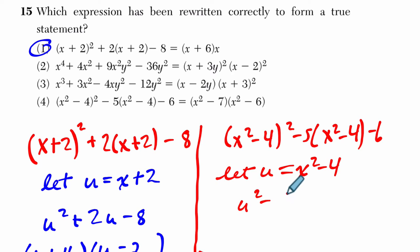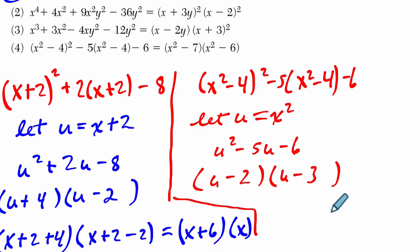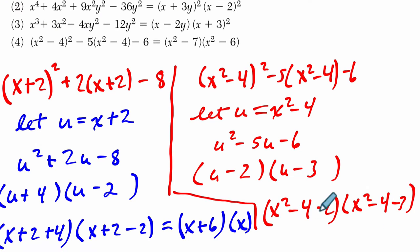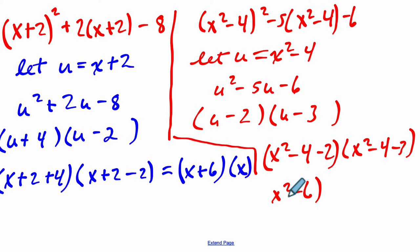let u equal x²-4. That would give us u² - 5u - 6. So u² - 5u - 6. Now that factors to two things that multiply to negative 6 and add to negative 5. And that's (u-2)(u-3). Plug back in what u equals, which is x²-4. So we have (x²-4-2) and then (x²-4-3). And that would become (x²-6)(x²-7).